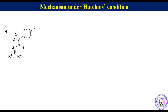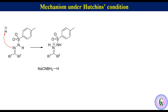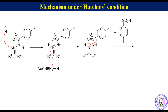Mechanism under Hutchins conditions: Tosylhydrazone in the presence of acid catalyst gets protonated to produce a protonated tosylhydrazone. The protonated C=N double bond becomes so reactive that it can be attacked by a mild hydride transferring agent like sodium cyanoborohydride. Hydride transfer generates N-alkyltosylhydrazone, which eliminates para-toluenesulfenic acid to produce alkyldiazenide. This alkyldiazenide then removes nitrogen gas to produce the product.